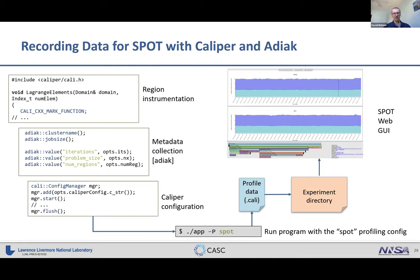All these parts are usually going to be automated in some form. If you're doing performance regression testing, it will probably end up in your continuous integration scripts. You essentially just run your test programs with the Caliper Spot configuration and move these files into a specified directory.